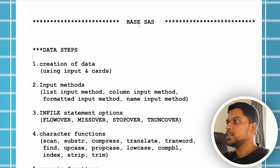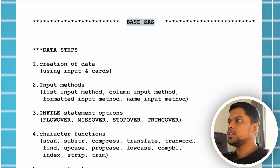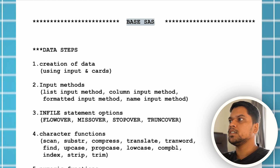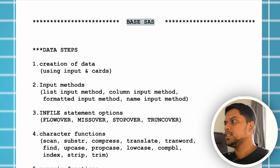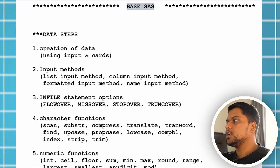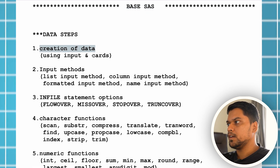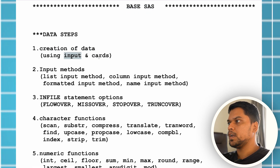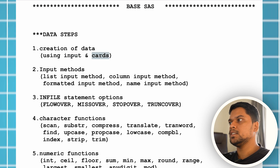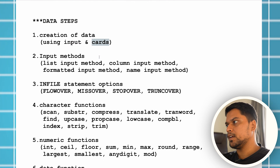As you can see on the screen, first we're going to start with base SaaS. The first thing you should learn is creation of data — how you can create data using input and cards, because that is the standard or basic way of creating data.